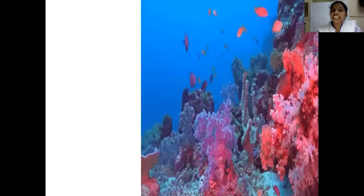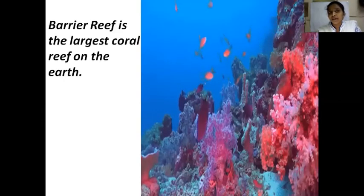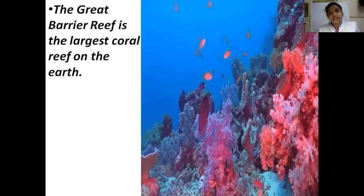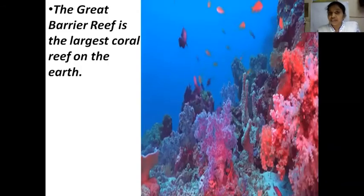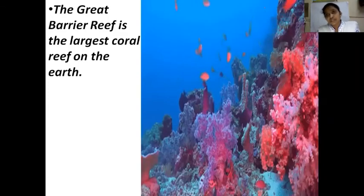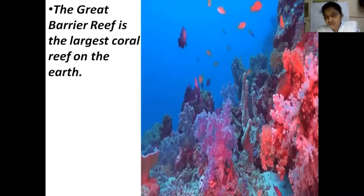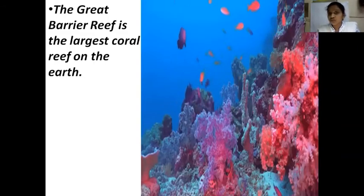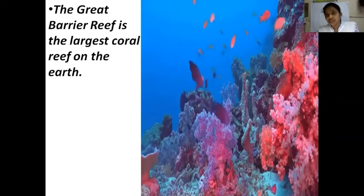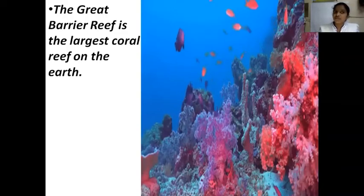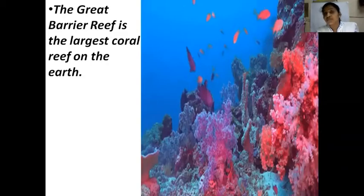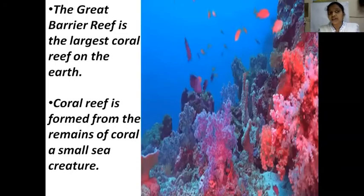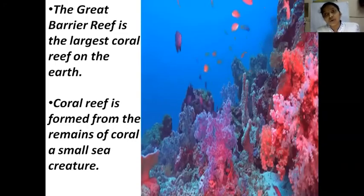This is the Great Barrier Reef — a coral reef. Coral is a small sea creature, and coral reef is formed from the remains of small sea creatures. The coral is also used to make ornaments. The Great Barrier Reef is the largest coral reef on Earth, and it is formed from the remains of a small sea creature called coral.